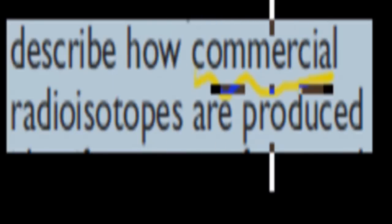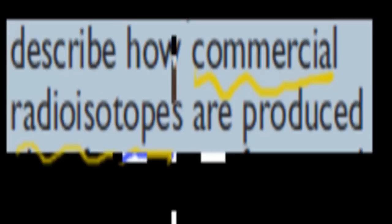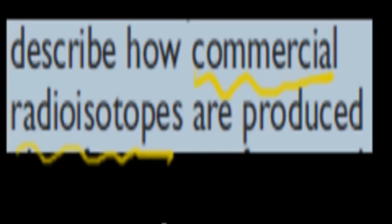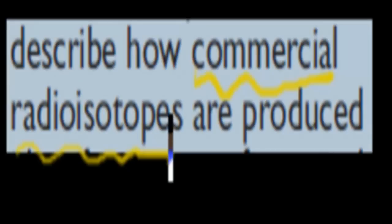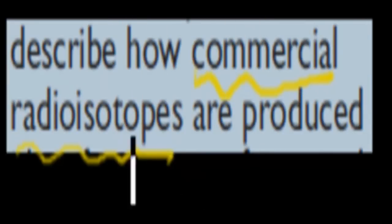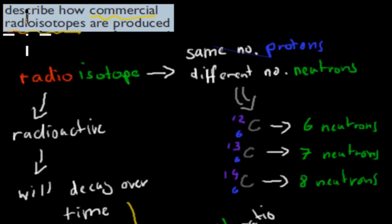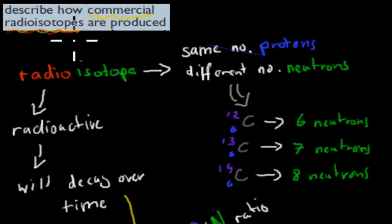The difference between commercial and transuranic is that many of the transuranic ones we can't really use for anything because they decay really fast. But these commercial ones have a longer half-life, so they can stay around for a bit longer. So I have to describe how they're produced, but before I start, I'm going to go over the word 'radioisotopes' again and what exactly that means.